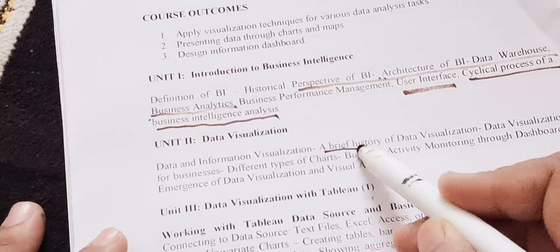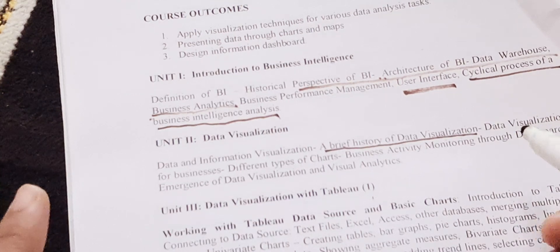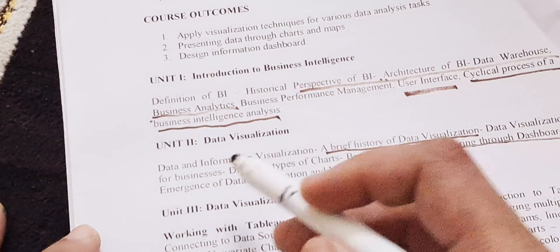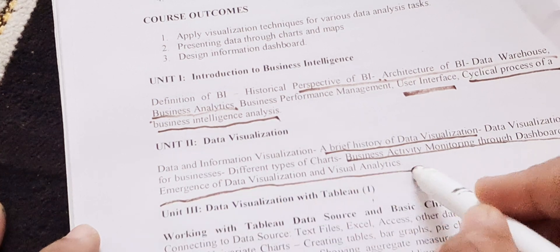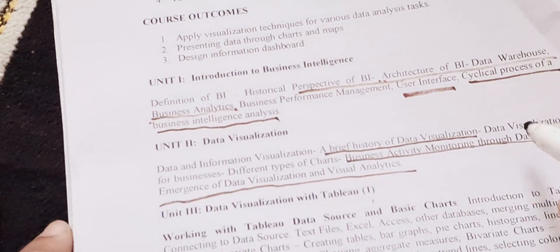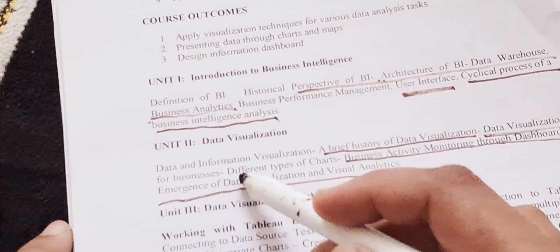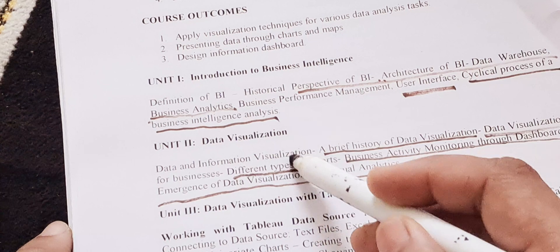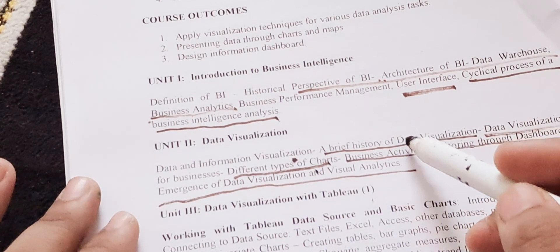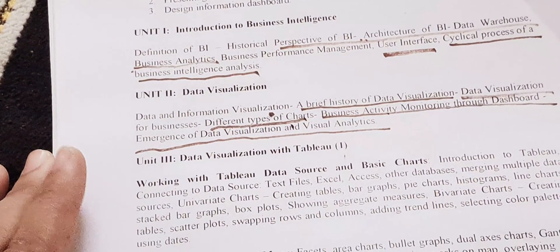Moving on to unit two, Data Visualization. Key topics here include a brief history of data visualization, which is very important, business activity monitoring through dashboards, emergence of data visualization and visual analysis, data visualization for business, and different types of charts. The types of charts question can come for long answer as well as short answer.